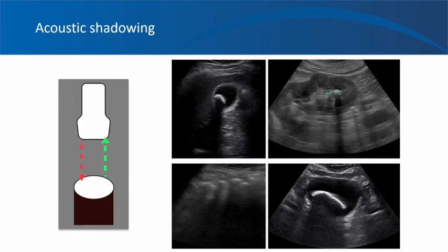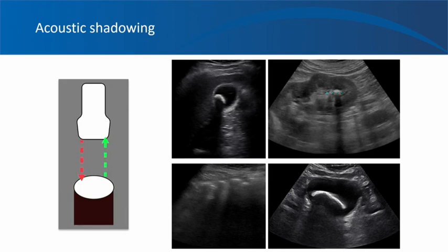The first important artifact is acoustic shadowing. When an object does not transmit sound — either absorbing or reflecting all the waves — there will be a loss of signal beyond the structure, appearing as a hypoechoic or anechoic band, similar to a shadow formed when you obstruct light. Shadowing is caused by partial or complete attenuation of the ultrasound beam. Shadows are classified as clean or dirty: clean shadows come from large calcified structures with defined margins, while dirty shadows from air, such as bowel gas, have obscured margins.